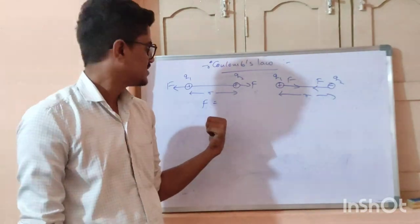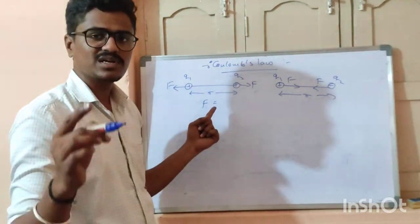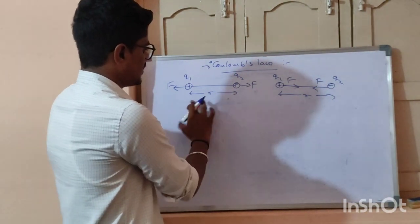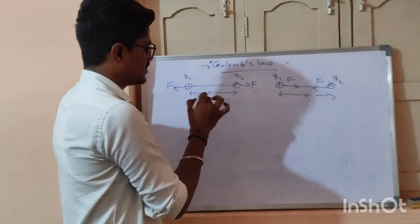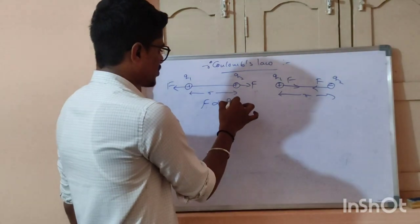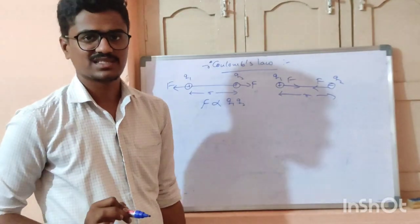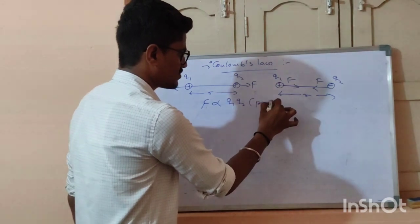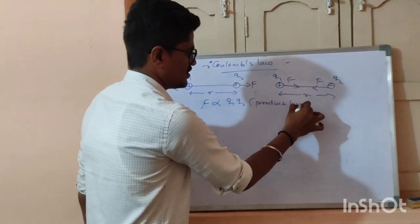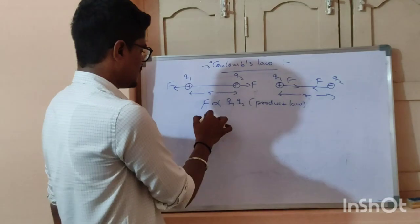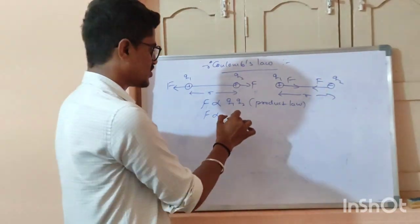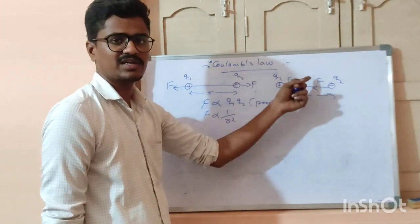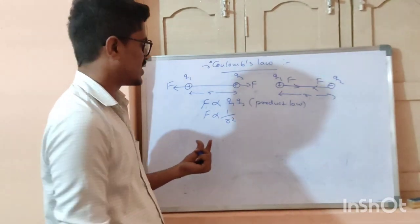Let's start the derivation. F, which is the electrostatic force, is directly proportional to the product of the magnitudes of the charges — that is Q1 times Q2. This is the product law. Next, force is inversely proportional to the square of the distance between them. This is the inverse square law.